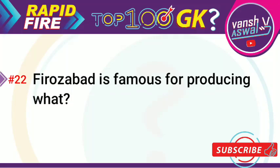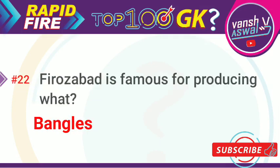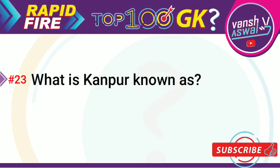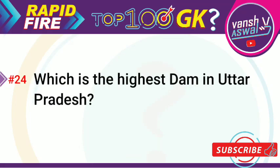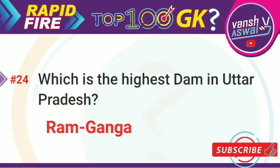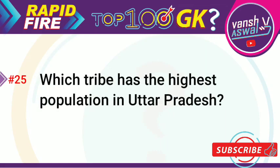Question 22: Firozabad is famous for producing what? Correct answer is bangles. Question 23: What is Kanpur known as? Answer: Manchester of the East. Question 24: Which is the highest dam in Uttar Pradesh? Answer is Ram Ganga. Question 25: Which tribe has the highest population in Uttar Pradesh? Answer is Tharu.